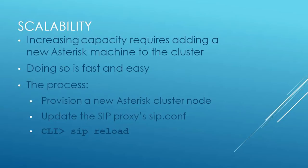Once you have your shiny new Asterisk feature server, you can simply add it to the registration proxy's SIP config. Once you have it referenced in there, it's just a matter of reloading the SIP module. The registration proxy running everything is now aware of and capable of routing calls to this new node. That's really all there is to it — it's a pretty straightforward process.